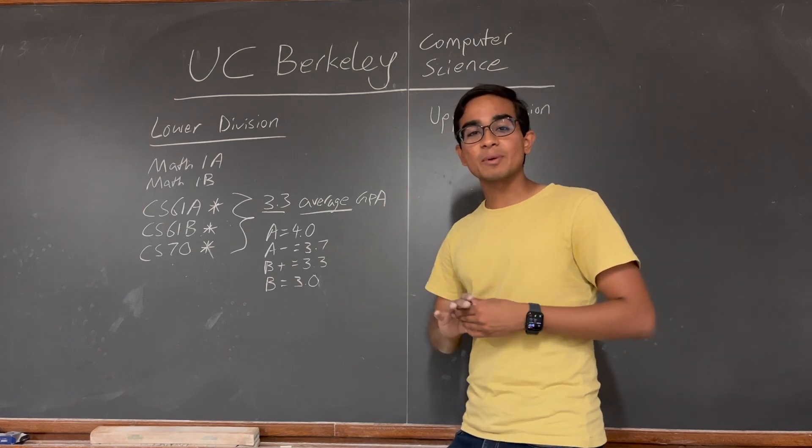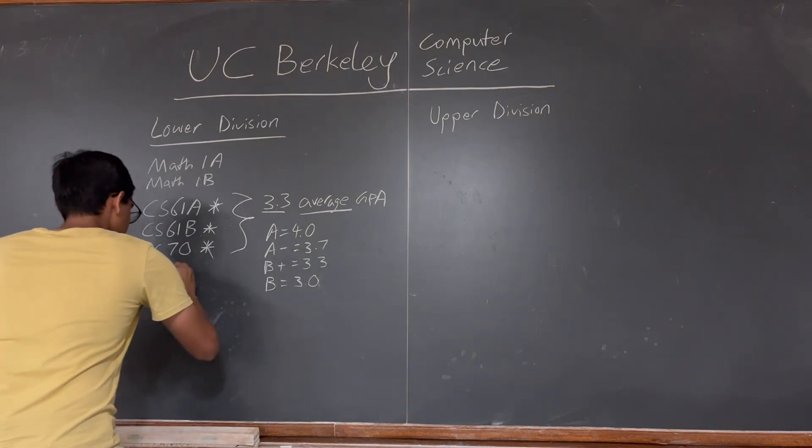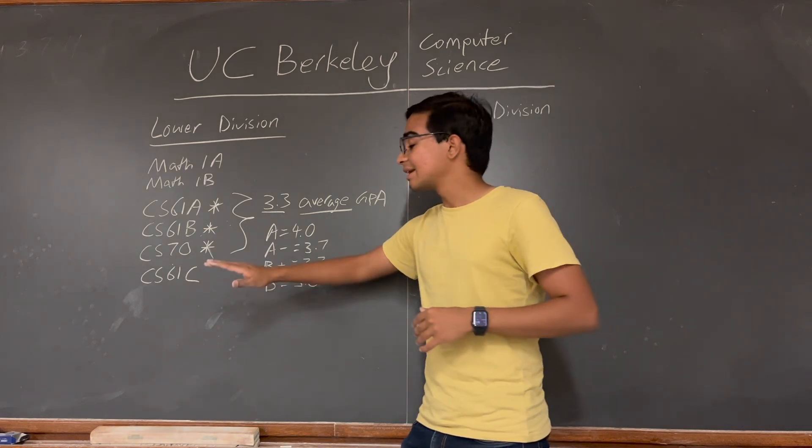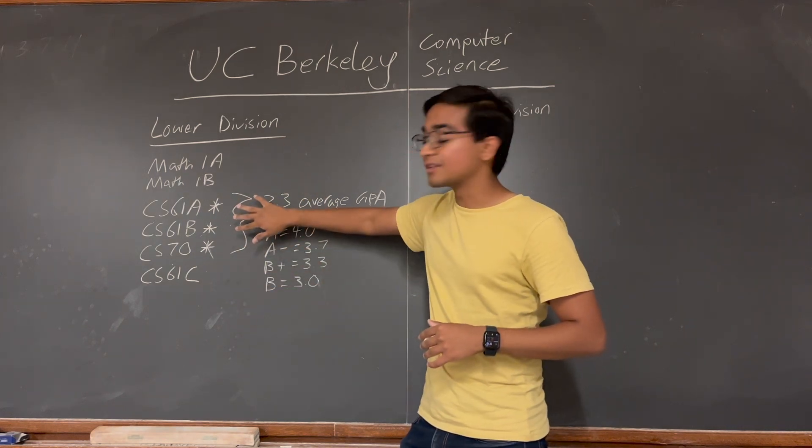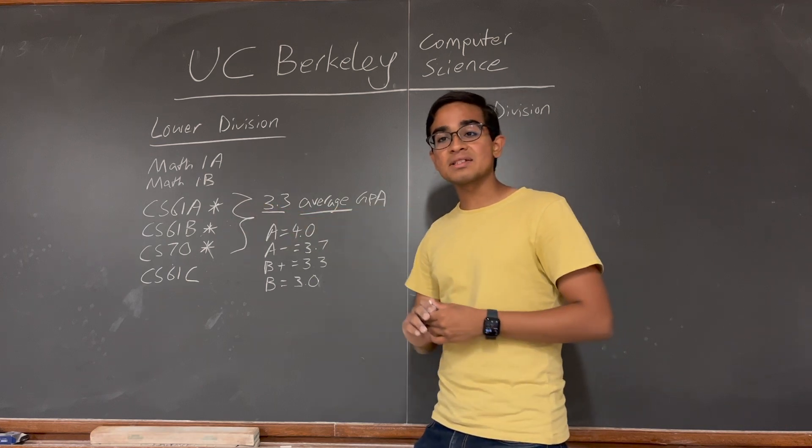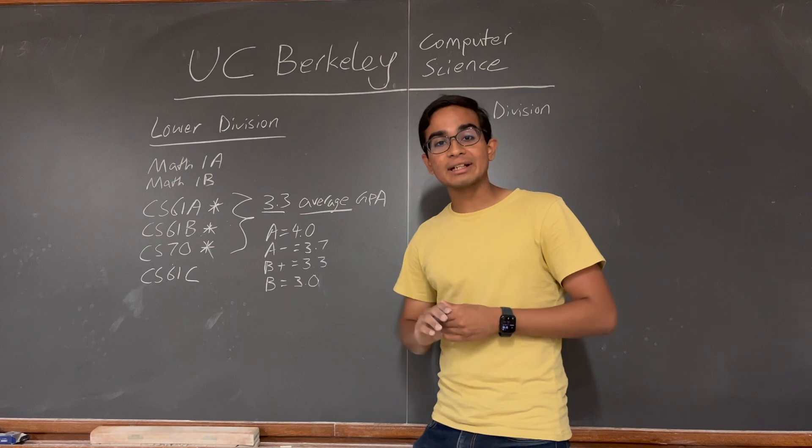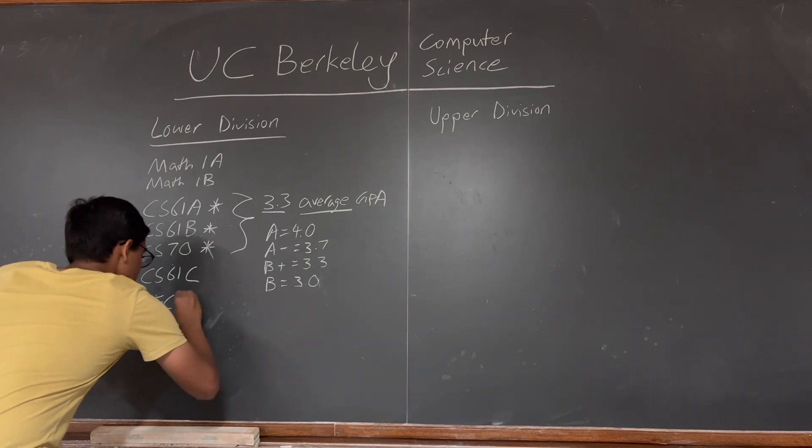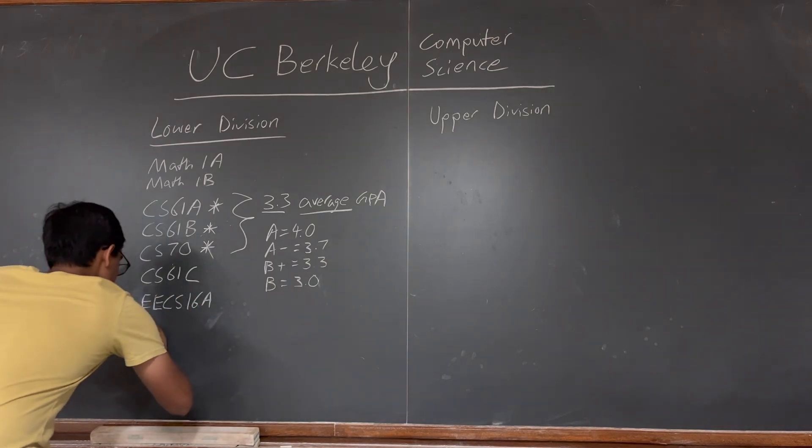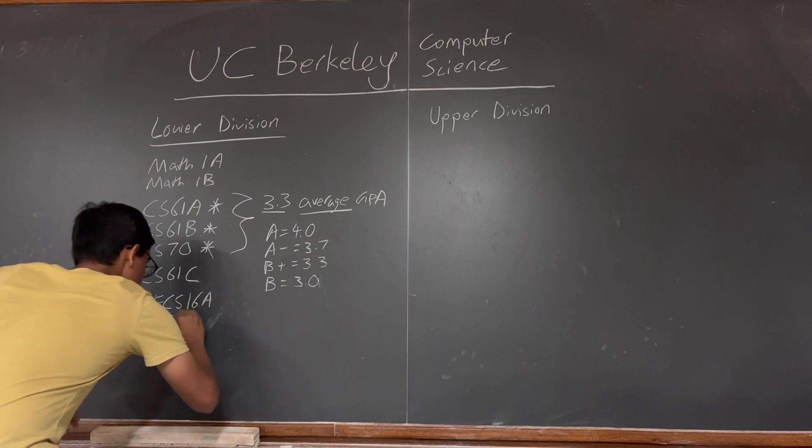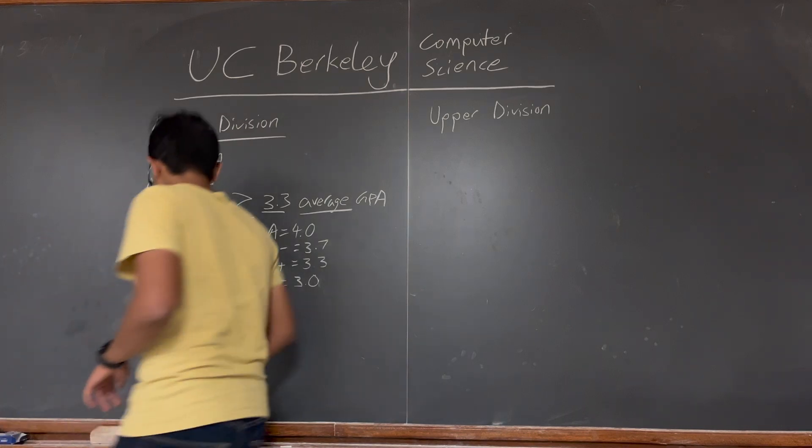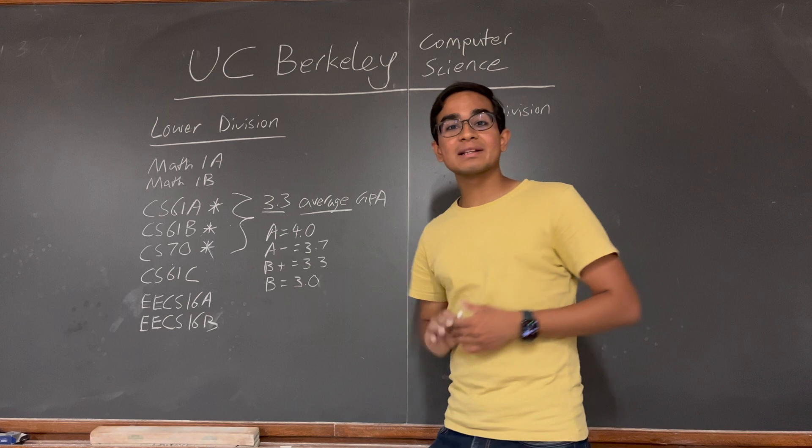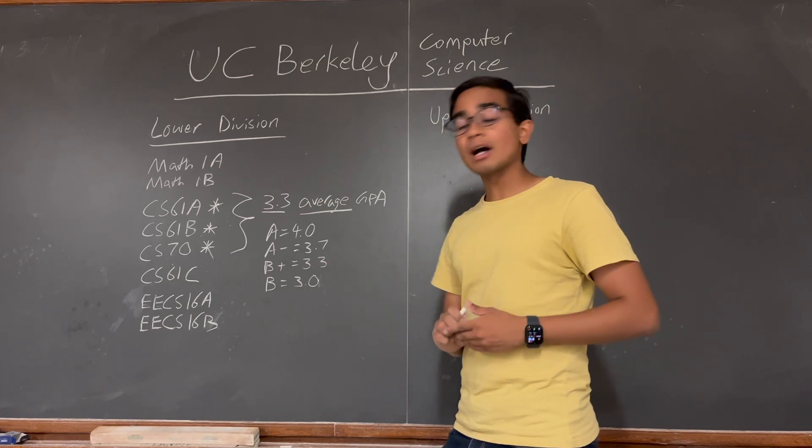Another class we'll look at is CS61C. This class is Machine Structures and Computer Architecture. It is a computer science class, but it is not included in these three. The next set of classes are EECS classes or Electrical Engineering classes. EECS 16A and EECS 16B are Introductory Electrical Engineering classes. Now you guys are lucky. As of last semester, they've removed the requirement for EECS 16B.